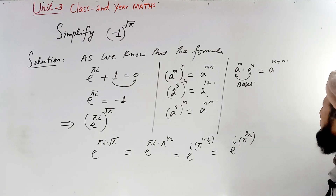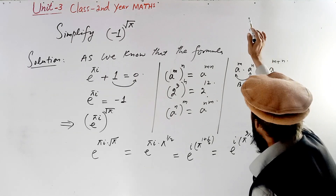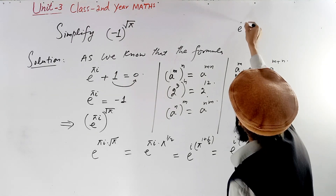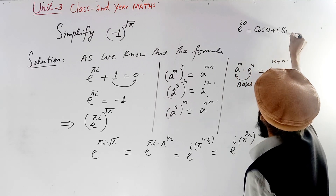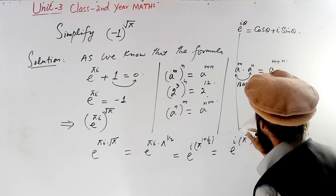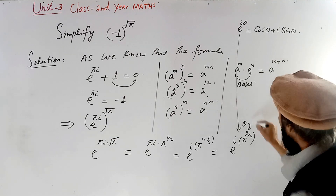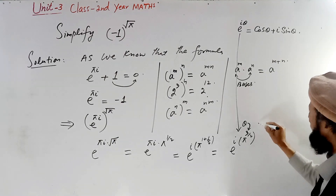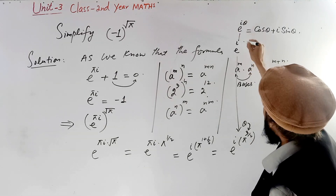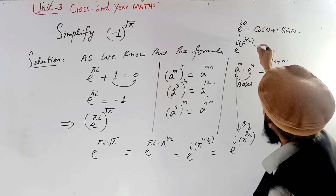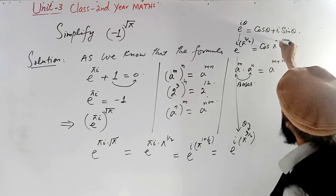Now we apply Euler's theorem: e to the power i theta equals cos theta plus i sin theta. Here, theta is equal to pi to the power 3 over 2. So we substitute this value of theta into the formula: cos(pi^(3/2)) plus i times sin(pi^(3/2)).